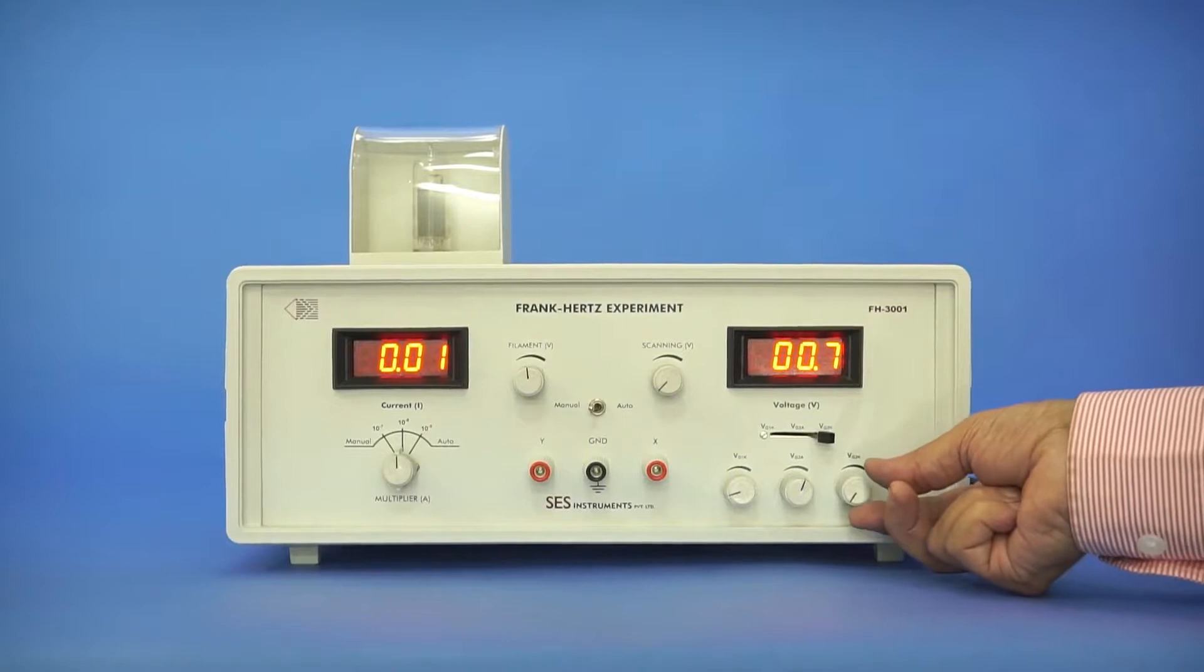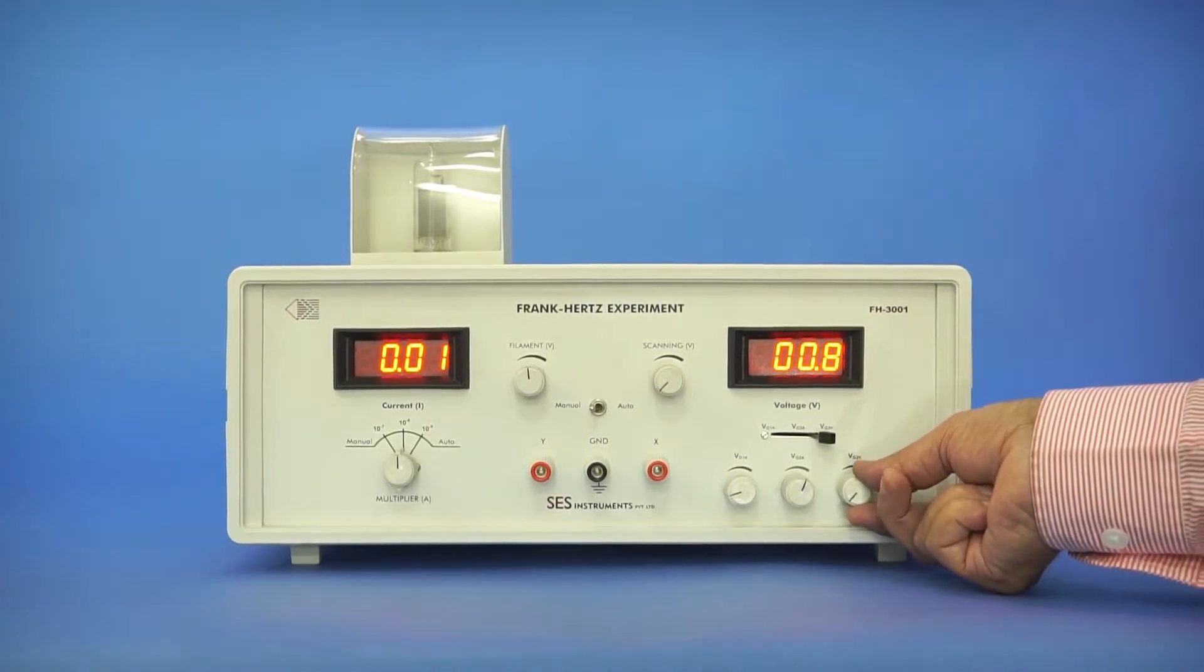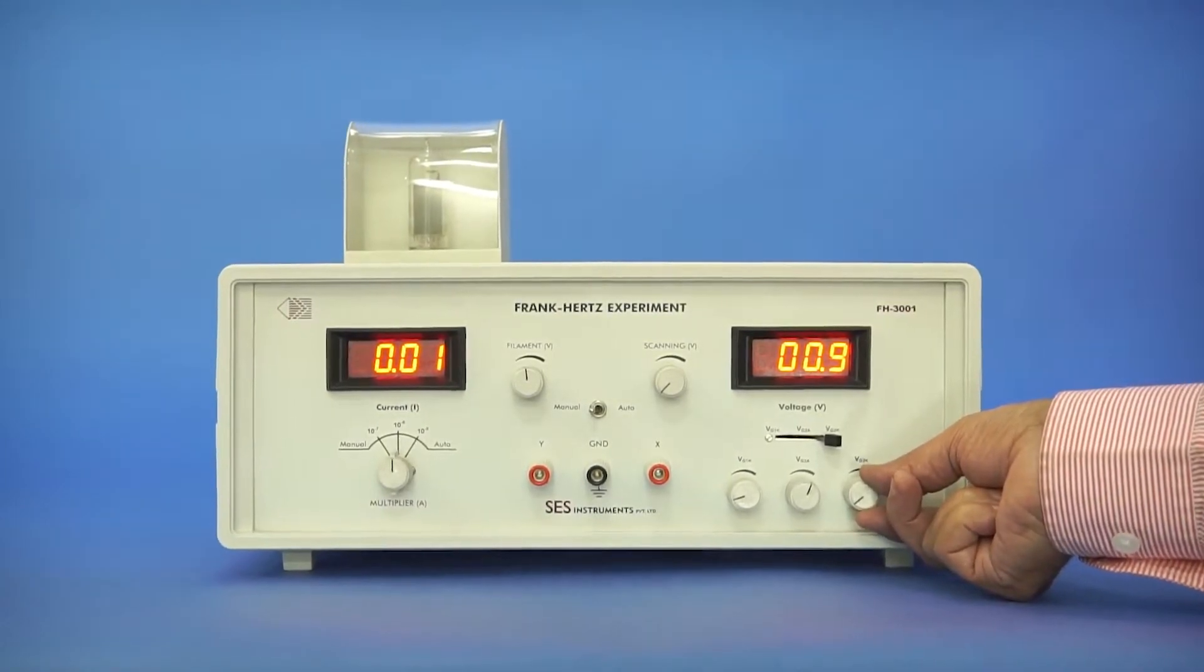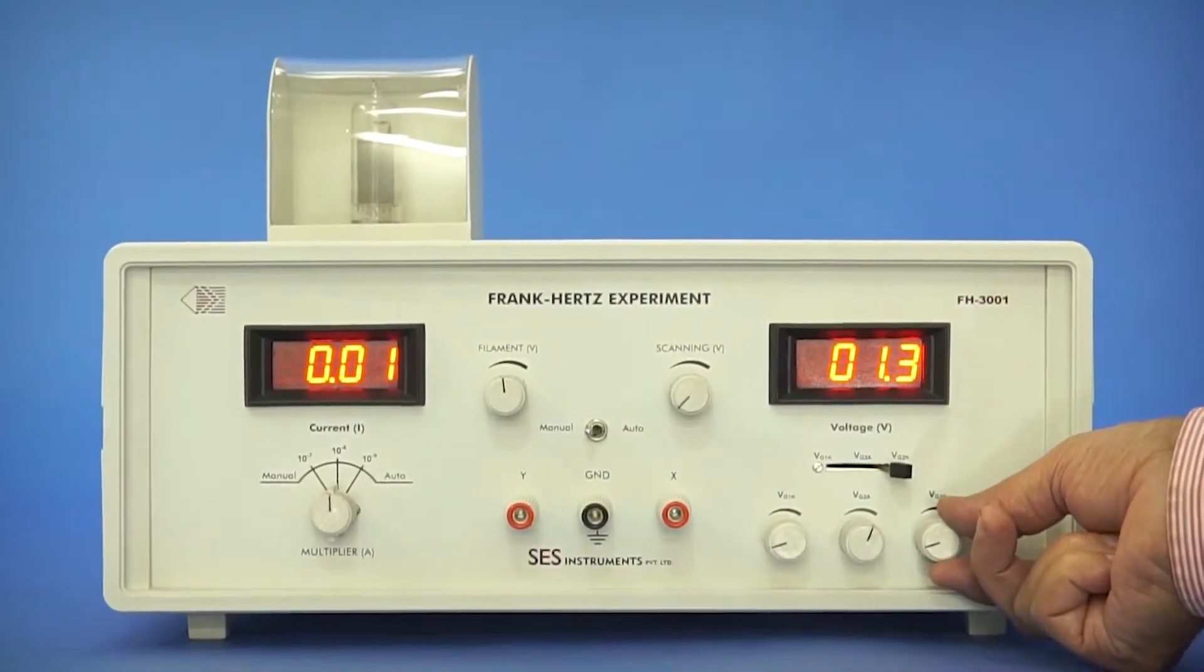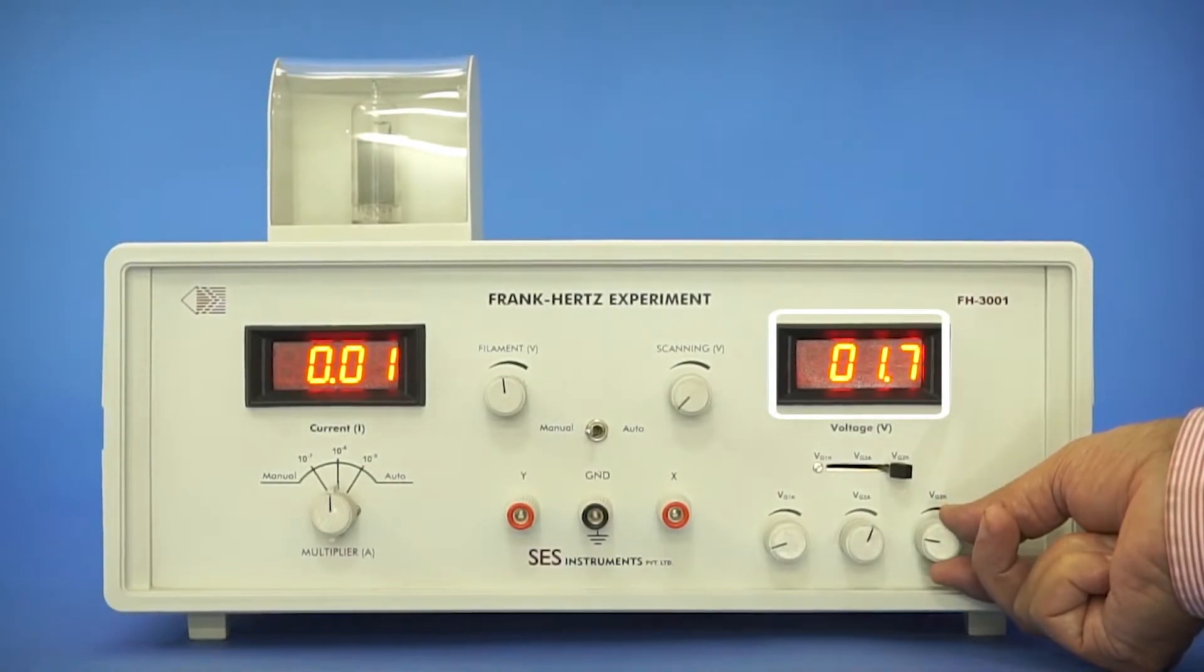Now slowly increase the accelerating potential VG2K one volt at a time, then record beam current value at each interval.